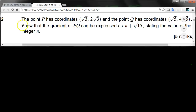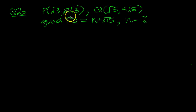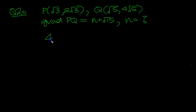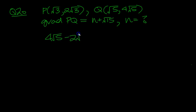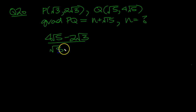Question 2, let's have a look at this then. Gradient of PQ: increase in y, so that's 4√5 minus 2√3, over the increase in x, √5 minus √3.